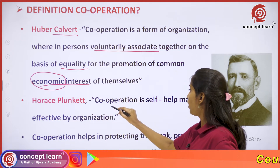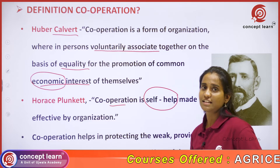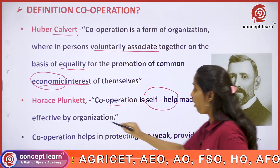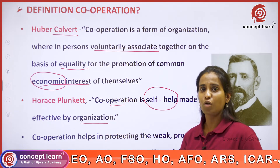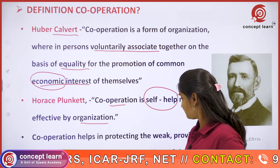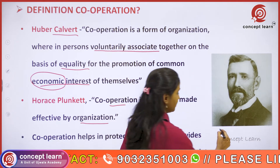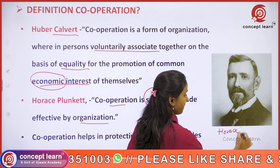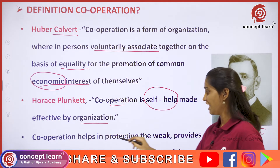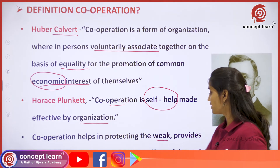Horace Plunkett said cooperation is the self-help made effective by the organization. He says that it is the self-help where we are helping for ourselves, made effective by the organization. In cooperatives, we are helping ourselves effectively, as told by Horace Plunkett. Cooperation will help in protecting the weak, provides equal justice to all, and promotes the welfare of the society.